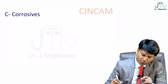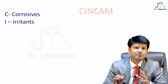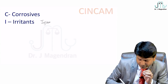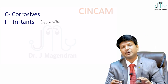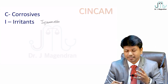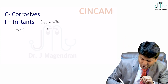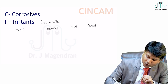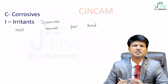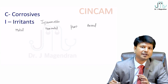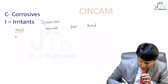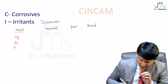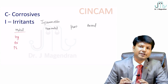The letter I in SYNCAM refers to irritants — any poison which can induce inflammation. There are four groups: metal, non-metal, plant, and animal irritants. Metals include mercury, lead, arsenic, iron, copper, cadmium, and zinc — the important ones for examination are mercury, arsenic, lead, copper, and iron. For non-metals, phosphorus is the important one. Plant irritants include Ricinus communis, Abrus Precatorius, Calotropis, Semi-carpus anacardium, Croton tigilium, and Capsicum annum.